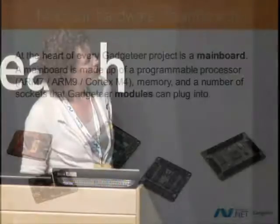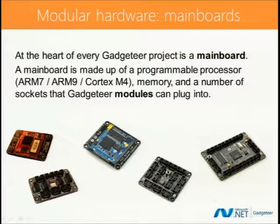When we launched Gadgeteer as a commercial product last August, we had one main board and about 10 modules available from one hardware manufacturer in the US. Now we have seven main boards and about 80 modules available from six hardware manufacturers around the world — quite a broad hardware spectrum, with main boards of different characteristics, processors, and speeds.